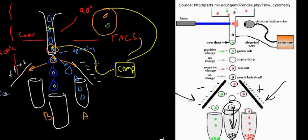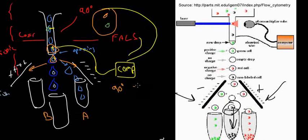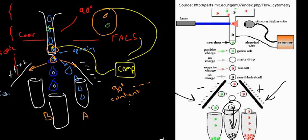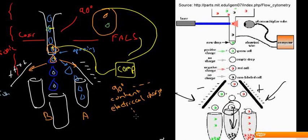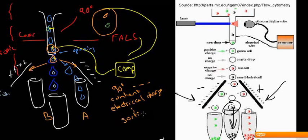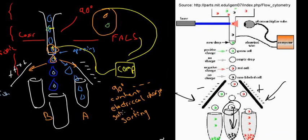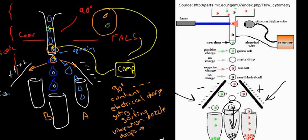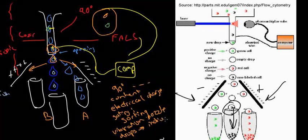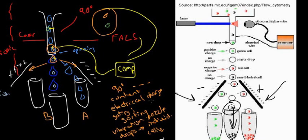The key phrases to remember are: ninety-degree light scattering to obtain information about the cell content, an electrical charge was induced, and some sort of sorting occurred. Throw in the word gating, and the vibration of the nozzle to create drops — and each drop contains one individual cell. This has come up as an essay question on an exam, so it's worth knowing well.